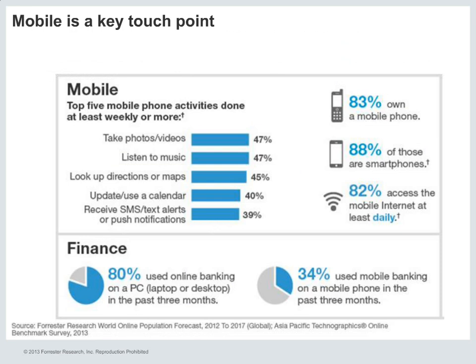Mobile is absolutely critical to driving e-commerce growth in the region. In metropolitan areas, 82% of consumers are accessing the Internet on their mobile phone at least daily, and 88% of mobile phone owners are using smartphones, giving them more opportunities to access digital content. Online shoppers in metropolitan China are even starting to use these devices for more advanced activities like finance — while 80% are using online banking on a PC, 34% are using their mobile devices for banking capabilities.